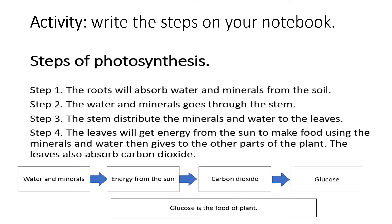For your activity, write the steps on your notebook. Steps of photosynthesis — step 1: the roots will absorb water and minerals from the soil. Step 2: the water and minerals goes through the stem. Step 3: the stem distributes the minerals and water to the leaves. Step 4: the leaves will get energy from the sun to make food using the minerals and water that gives to the other parts of the plant. The leaves also absorb carbon dioxide. Write the steps on your notebook.